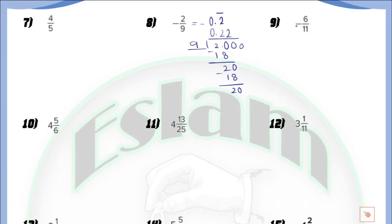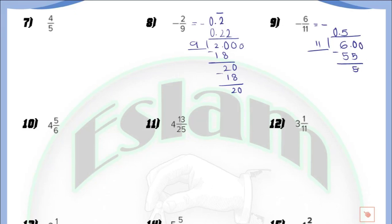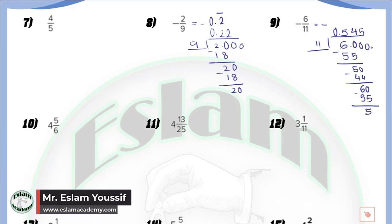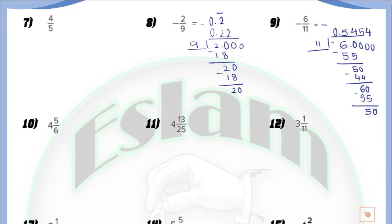In question number 9, once we have a negative fraction, the answer will be negative. We divide 6 by 11: 6 is smaller than 11 so we write 0 point. 60 divided by 11 equals 5, and 5 times 11 equals 55. By subtraction we get 5, then 60 again; 60 divided by 11 is 5 again giving remainder 5, then 50 divided by 11 equals 4, because 4 times 11 equals 44. We find that 54 repeats infinitely, so the answer is negative 0.54 with a bar above 54.